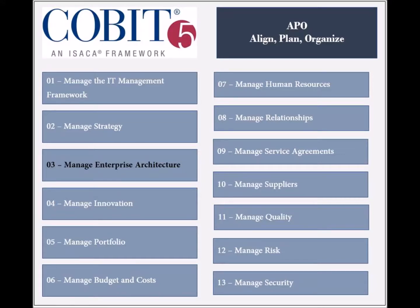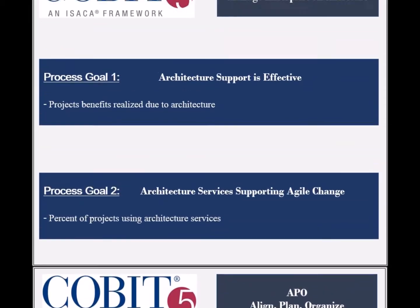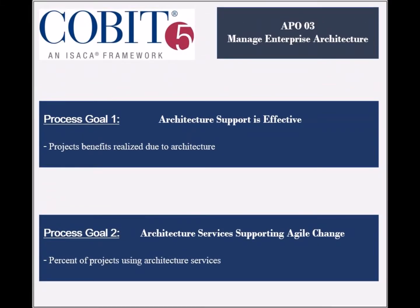The third process of the Align Plan and Organize Domain, called Manage Enterprise Architecture, has four process goals. The first process goal is to ensure that the architecture supports the enterprise effectively. Its achievement is measured by the project realized benefits due to architecture involvement and by the level of architecture customer feedback. The second process goal is to enable the architecture to support agile enterprise changes, and its achievement is measured by the percent of projects that use the architecture services.